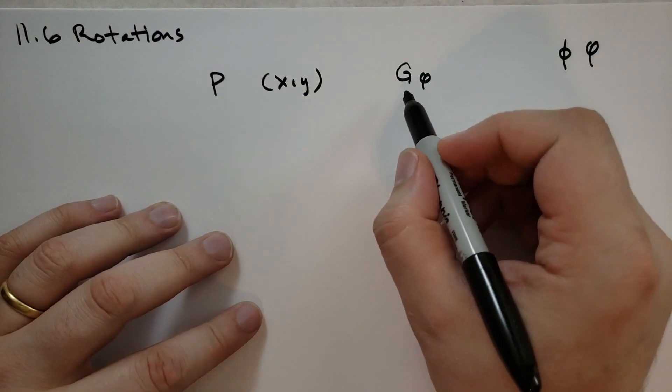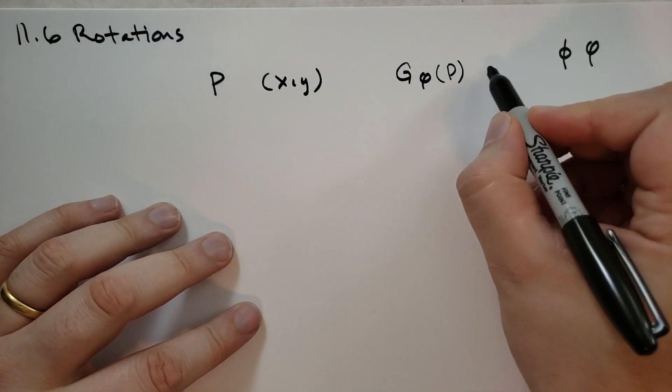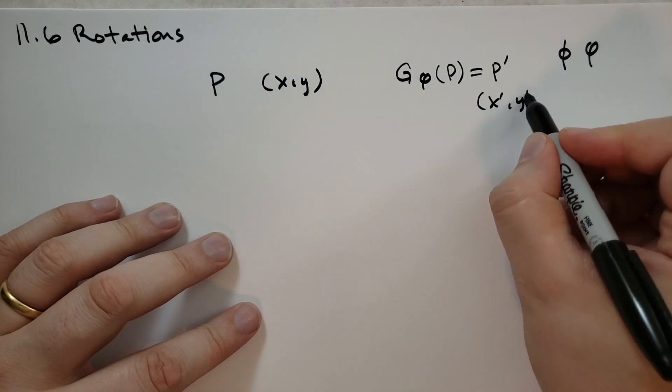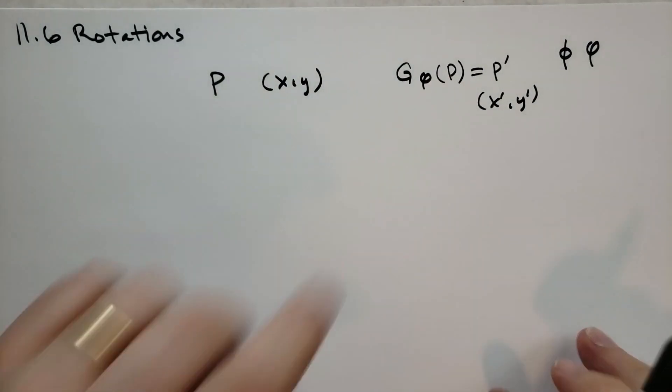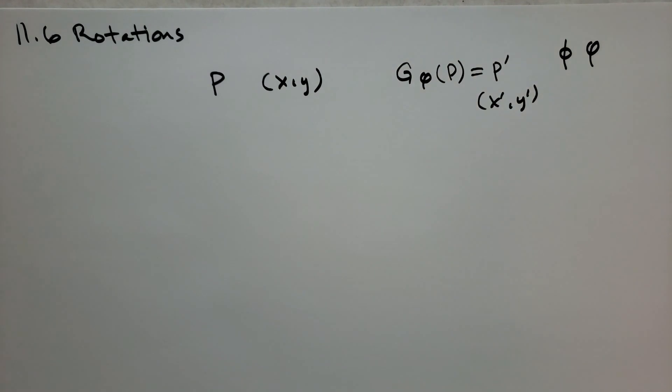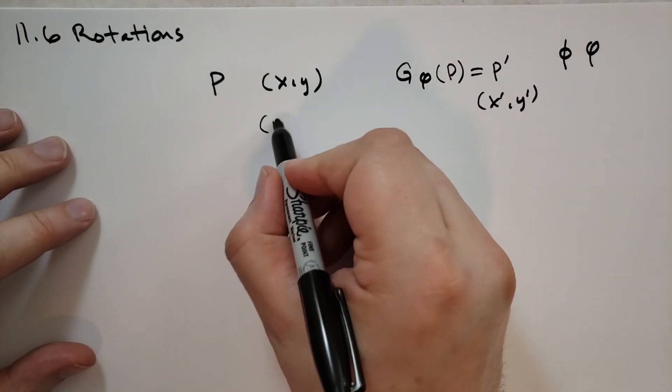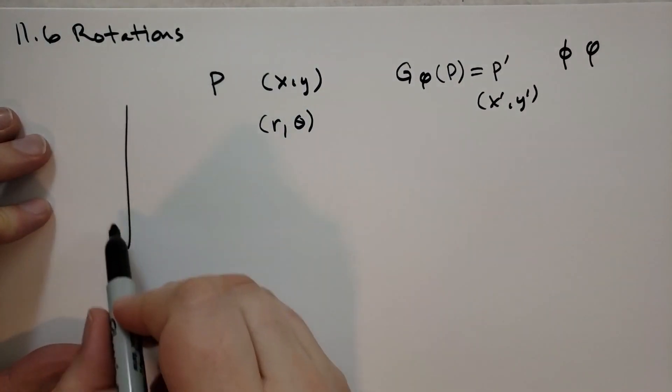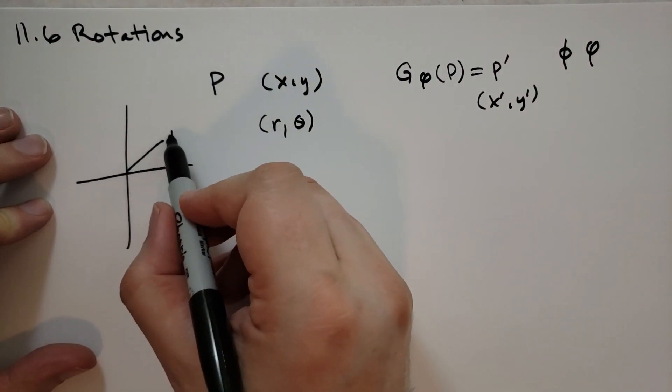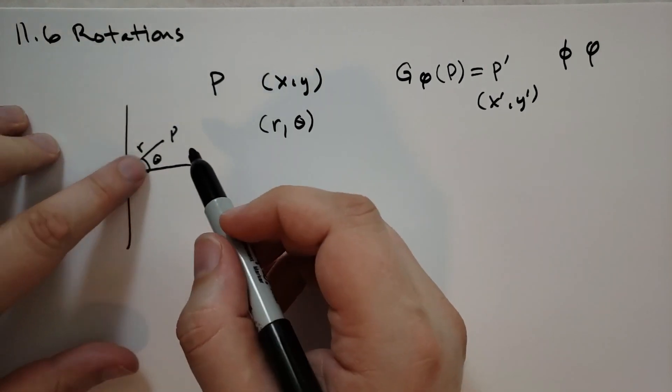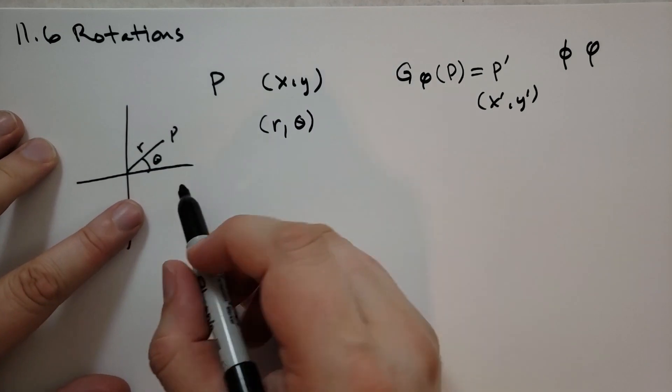So we're going to take and apply this rotation to P such that we'll get a point P prime that has coordinates x prime and y prime. So we're asking what happens to a point that we rotate through the origin of an angle of phi. So how do we describe x prime and y prime? Well, if we convert P to polar coordinates, we're going to have r comma theta. So just to kind of understand what we're talking about here, let's say this is point P. r is that distance from the origin, and theta is that angle that that line makes with the x-axis.